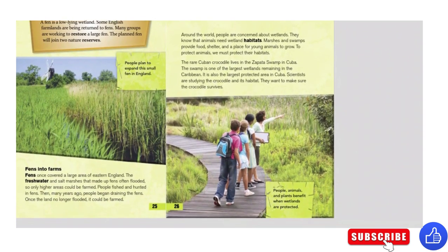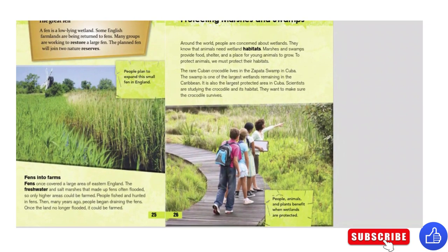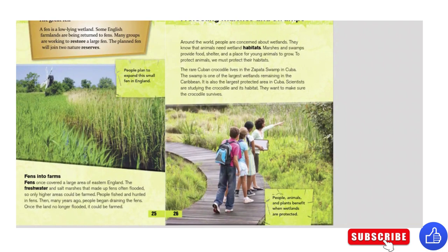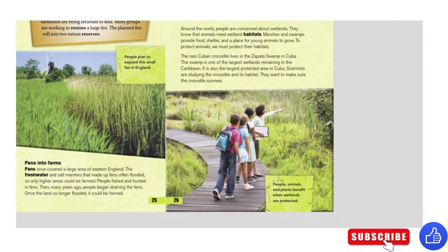Protecting Marshes and Swamps. Around the world, people are concerned about wetlands. They know that animals need wetland habitats. Marshes and swamps provide food, shelter, and a place for young animals to grow. To protect animals, we must protect their habitats. The Cuban crocodile lives in Zapata Swamp in Cuba — the swamp is one of the largest wetlands remaining in the Caribbean. It is also the largest protected area in Cuba. Scientists are studying the crocodile in its habitat, because they want to make sure the crocodile survives. People, animals, and plants all benefit when wetlands are protected.